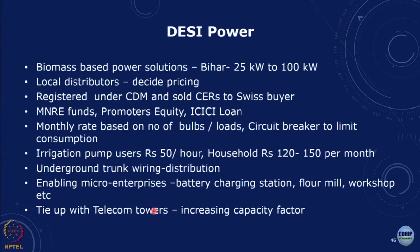Another model is Desi Power, predominantly in Bihar. Their model was to aggregate with local distributors, obtain government funding and equity, focus on energy efficiency, tie up with micro enterprises and telecom towers to increase capacity factors. In many cases instead of putting meters, they charged a monthly flat rate based on the number of bulbs or loads, with a circuit breaker to limit consumption. If consumption was exceeded over a couple of months, the customer would be disconnected.